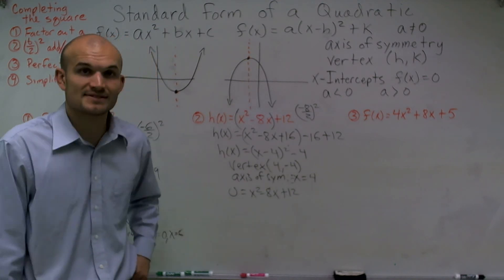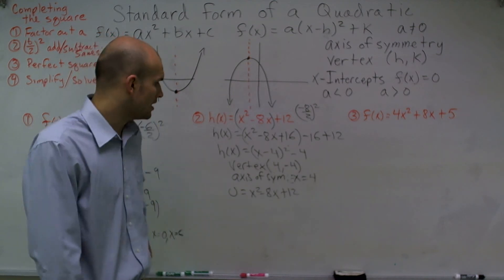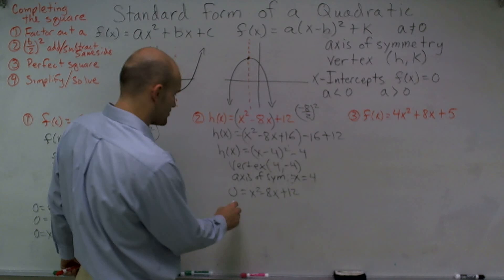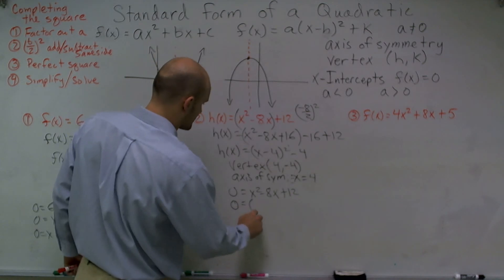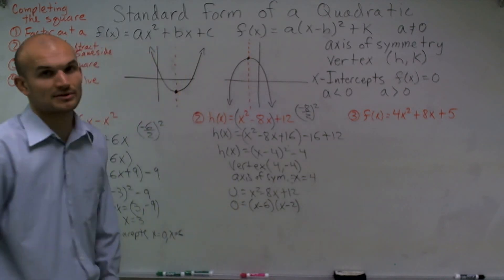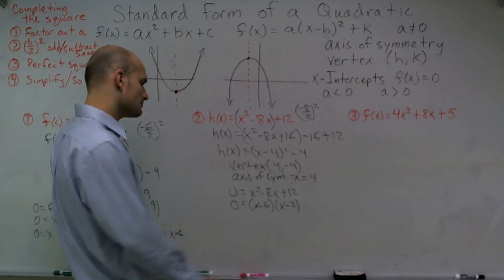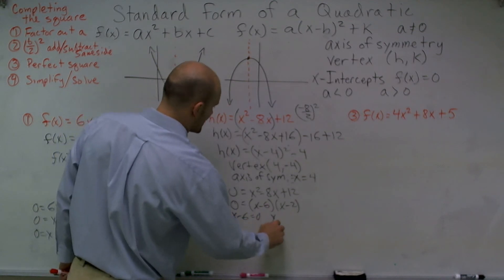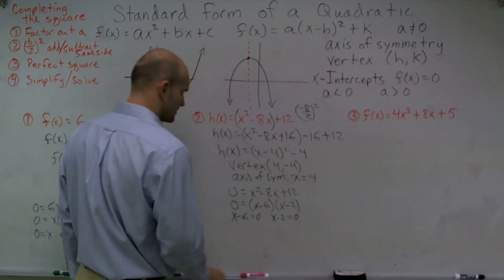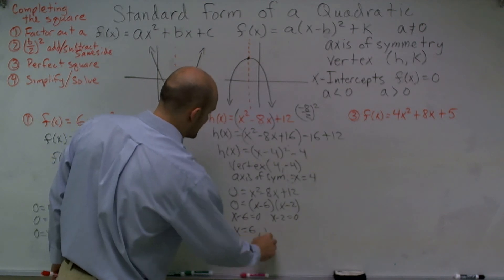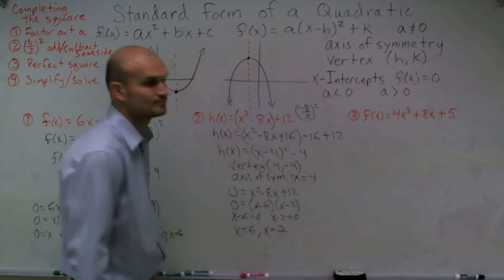they'll multiply to give me 12, but they'll add up to give me negative 8. So I can factor this problem probably quicker. So therefore, now I have x - 6 = 0, and x - 2 = 0. So therefore, my x-intercepts, x = 6, and x = 2.